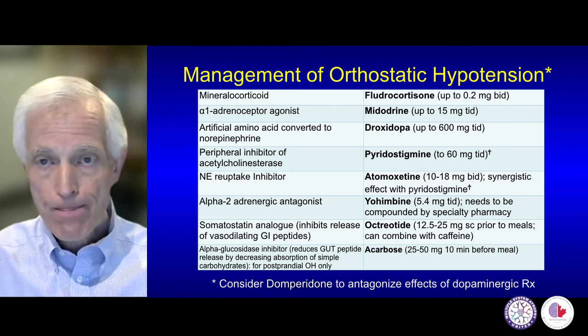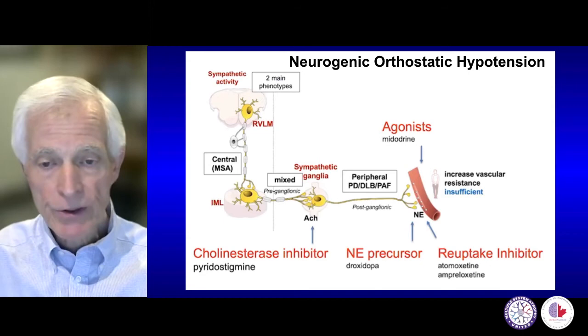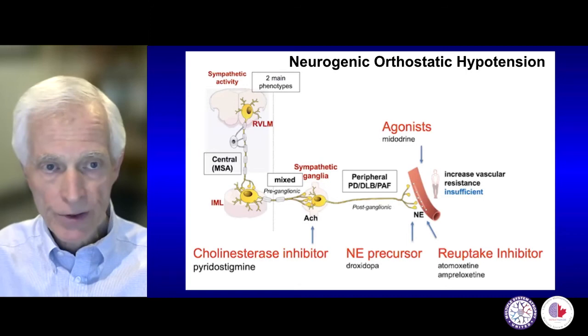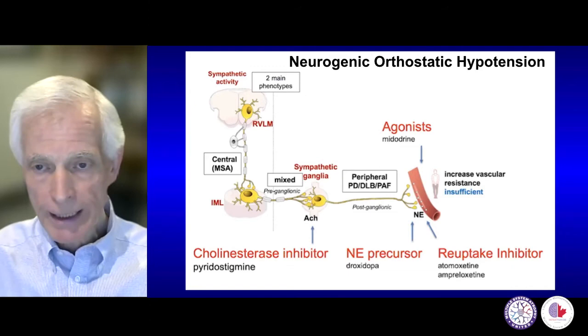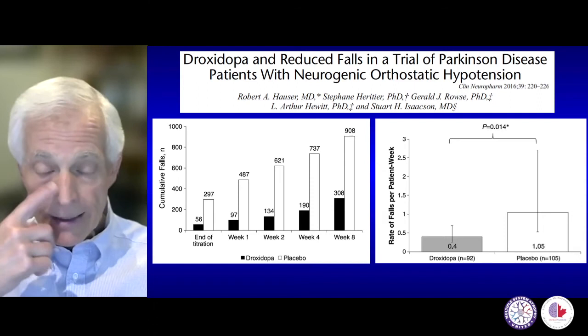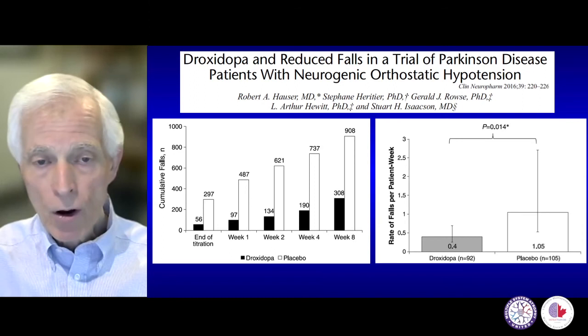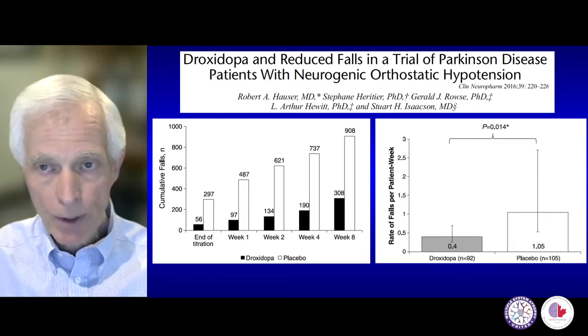A slide shows where each treatment is effective: the peripheral nervous system may be most impacted by reuptake inhibitors, whereas central nervous system disease in multiple system atrophy allows certain drugs to have an effect. Always remember that falls may be secondary to or partly related to orthostatic hypotension — droxidopa has been shown in clinical trials to reduce falls in people with Parkinson's disease, and the same applies to neurogenic orthostatic hypotension in MSA.